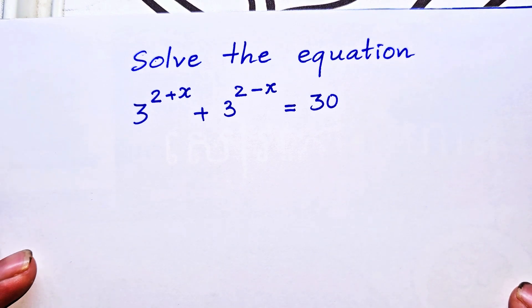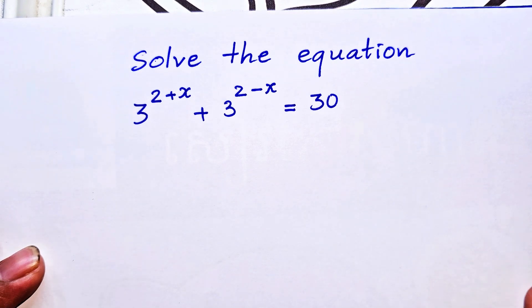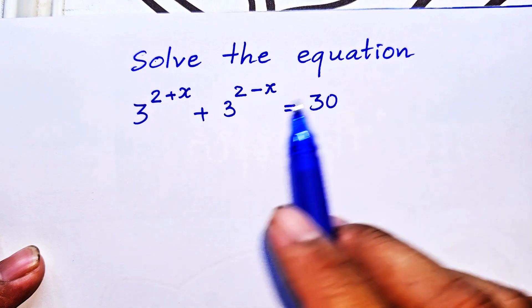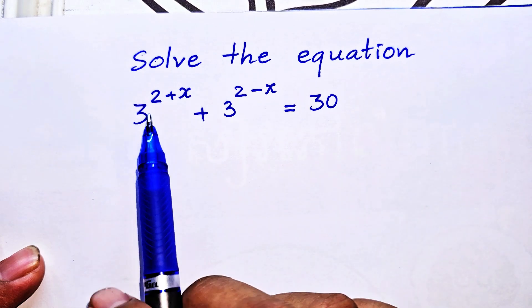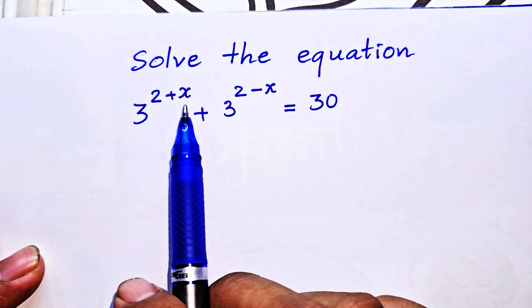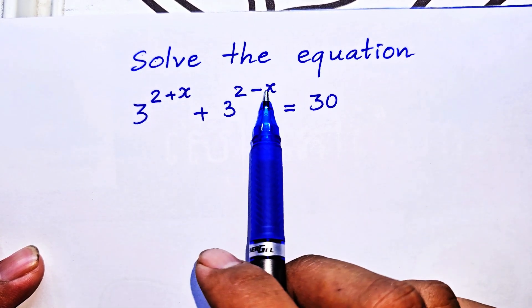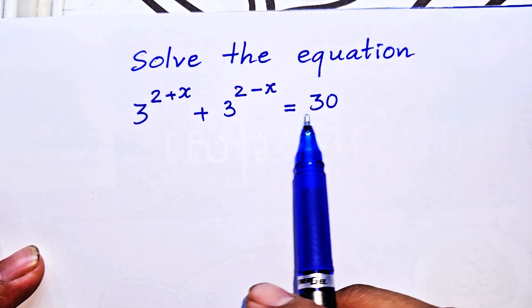Hello everyone, welcome to my YouTube channel. Today I have one exercise to solve: the equation 3 to the power (2 + x) plus 3 to the power (2 − x) equals 30.